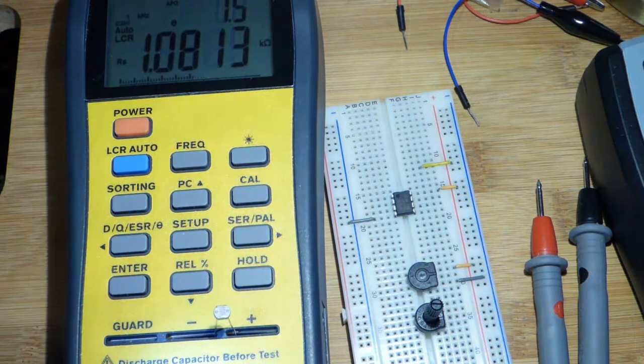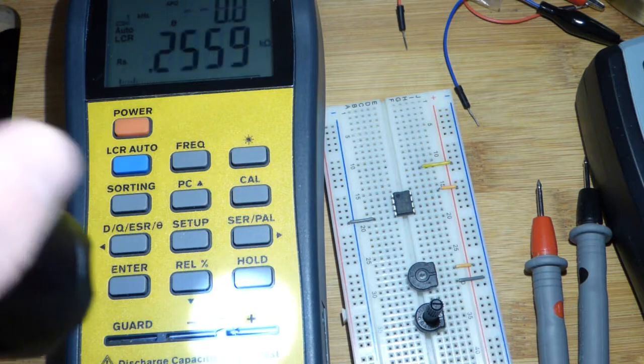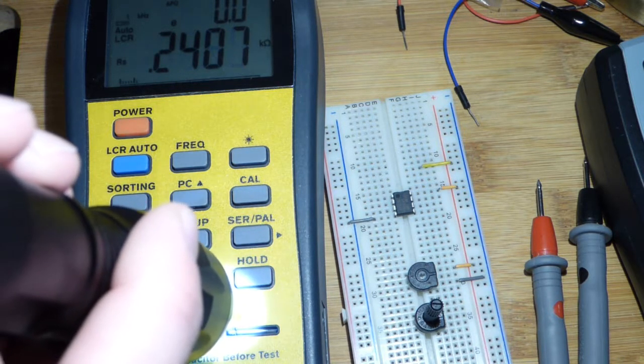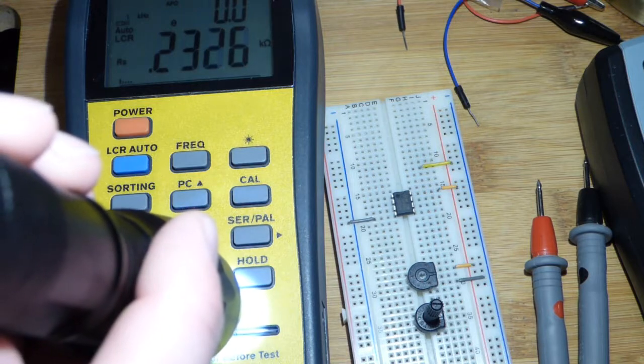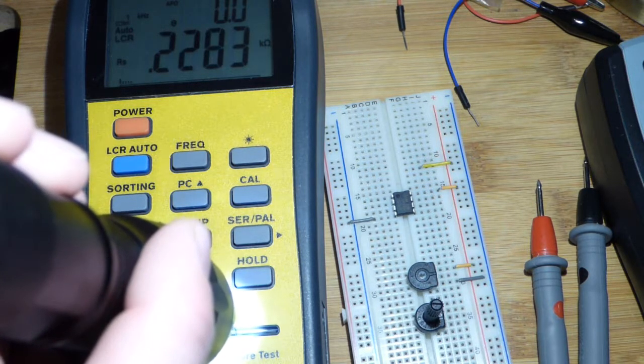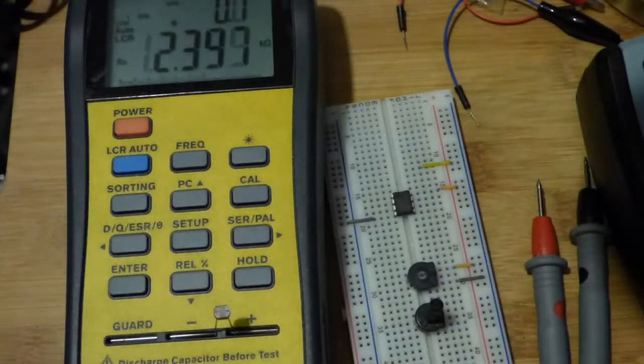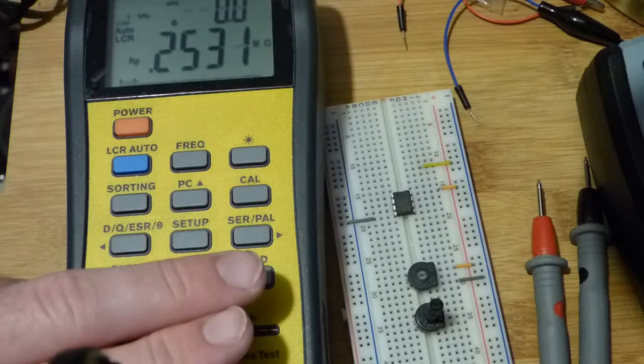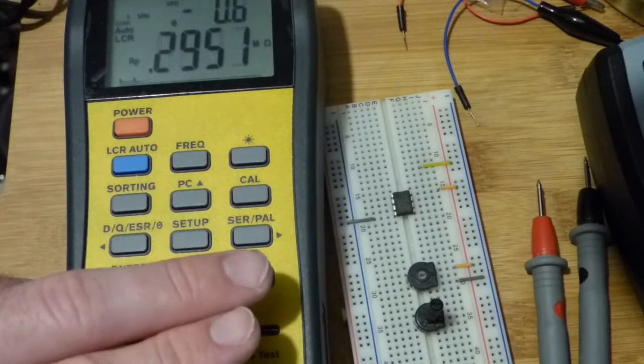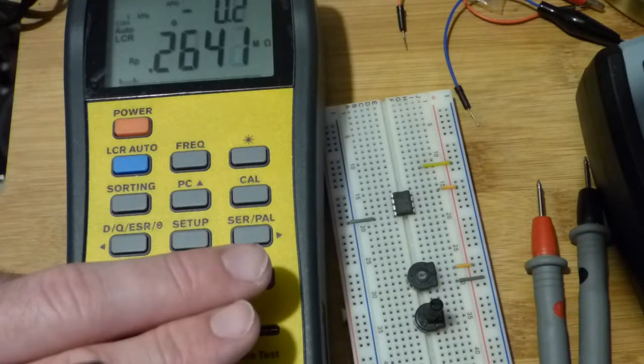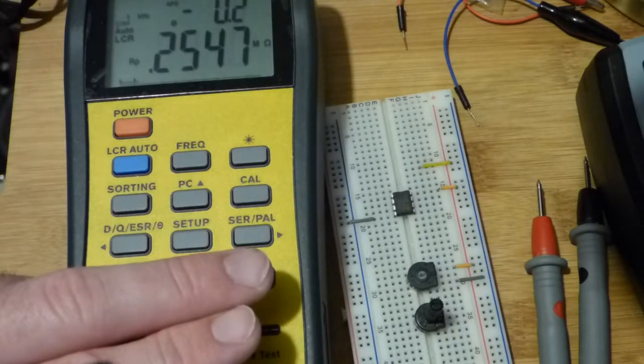So that's 1,200 ohms. I got a flashlight here. I'll focus the light on there, try not to block the camera. You can see we got about 0.2, so 200 ohms, a little bit more. And if I turn the light off, cover it, it says pretty much 0.3 mega ohms. So 300,000 ohms.